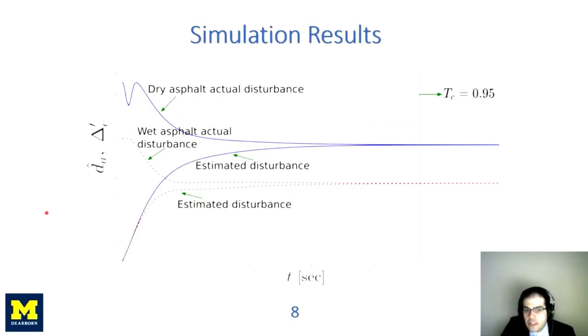To see how effective the proposed attack policy is, let's see some simulation results for two different driving scenarios on dry asphalt and wet asphalt. So, TC equal to 0.95 seconds is the finite time by which the adversary would like to make sure that the wheel gets locked.